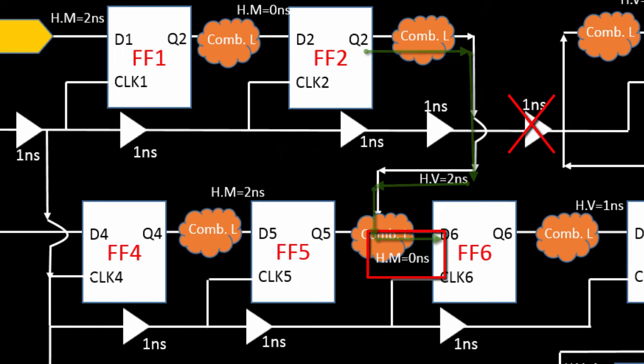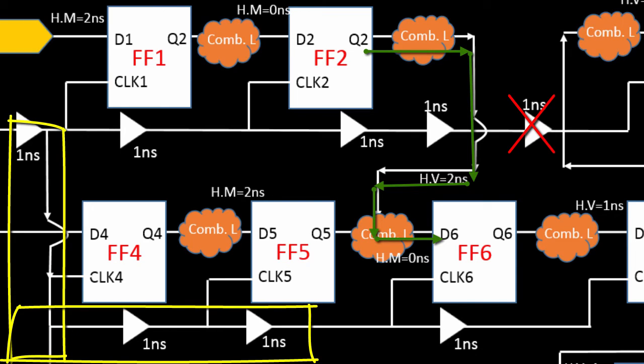Now this timing path is between the FF2 and FF6. Now before downsize the clock buffer, clock skew was 6 minus 4. So with respect to this 1, 2, 3, 3 cross 2 is 6, and with respect to this 2 buffer, 2 cross 2 is 4. So it was like 6 minus 4, 2 nanosecond. But now it become 3 minus 2 equals to 1 nanosecond.